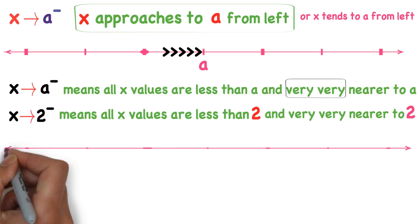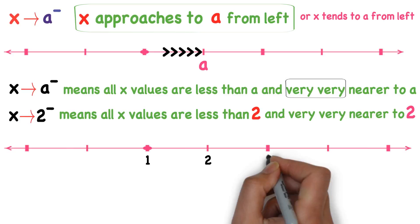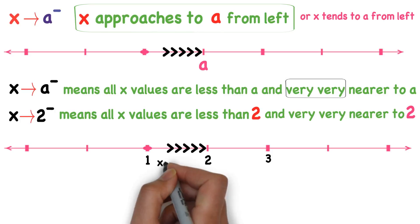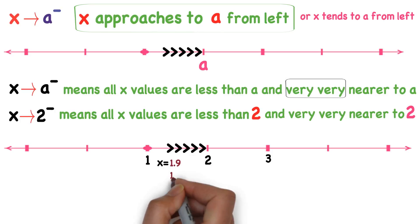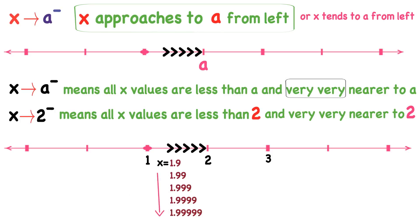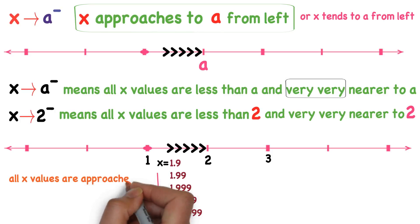Consider a equals 2 on the number line. X approaches to 2 from left. That means all x values are 1.9, 1.99, 1.9999, and so on. You observe that all these values are approaching to 2 from left — all x values are less than 2, very very nearer to 2, and approaching to 2 from left.